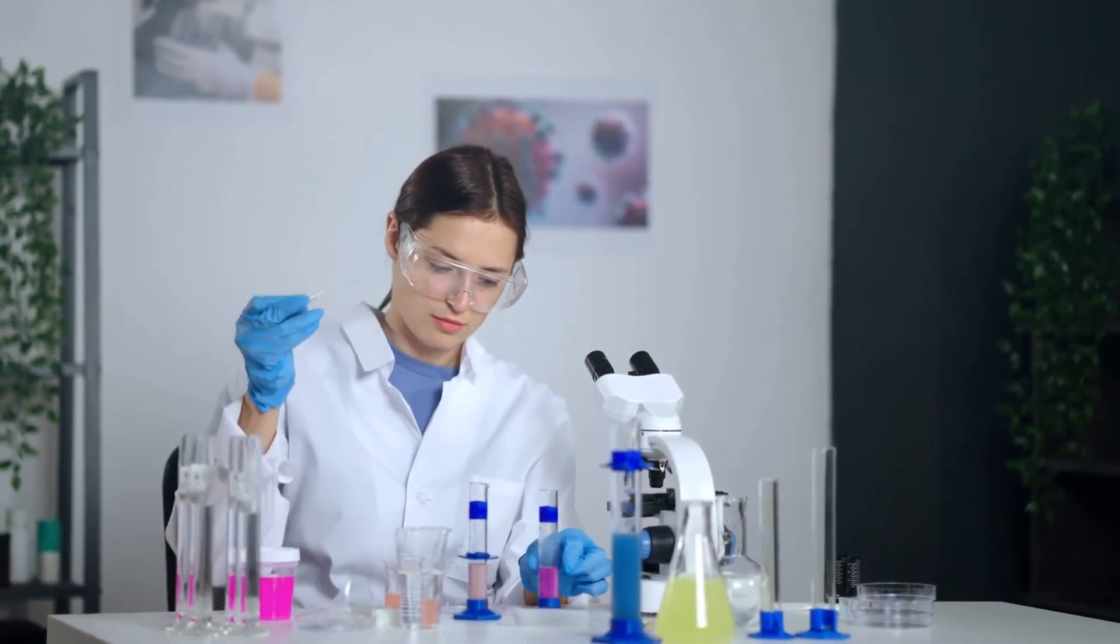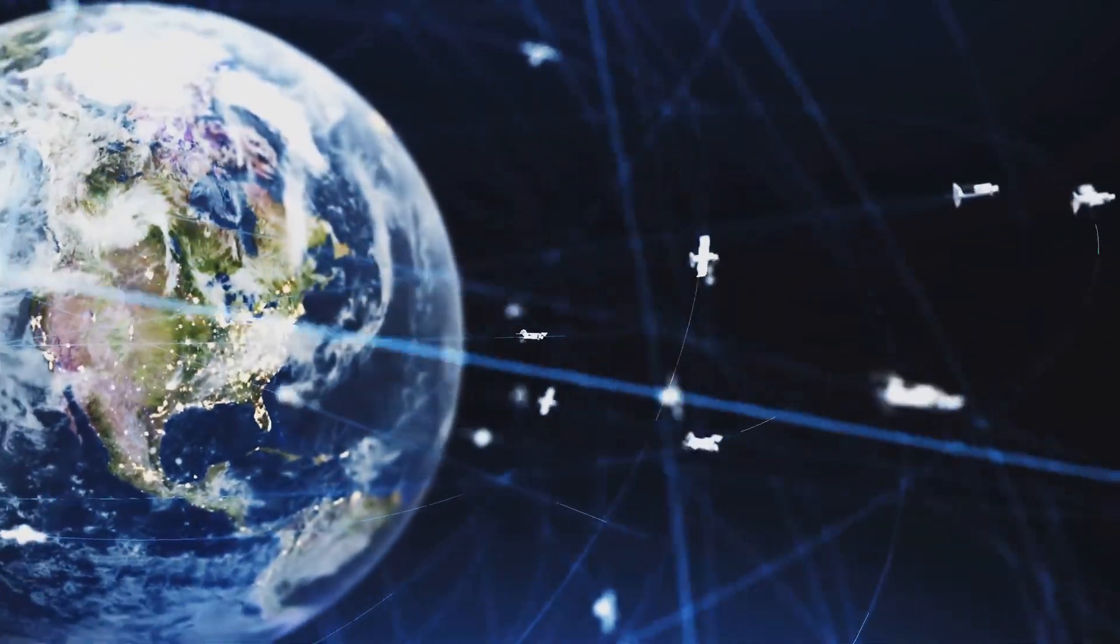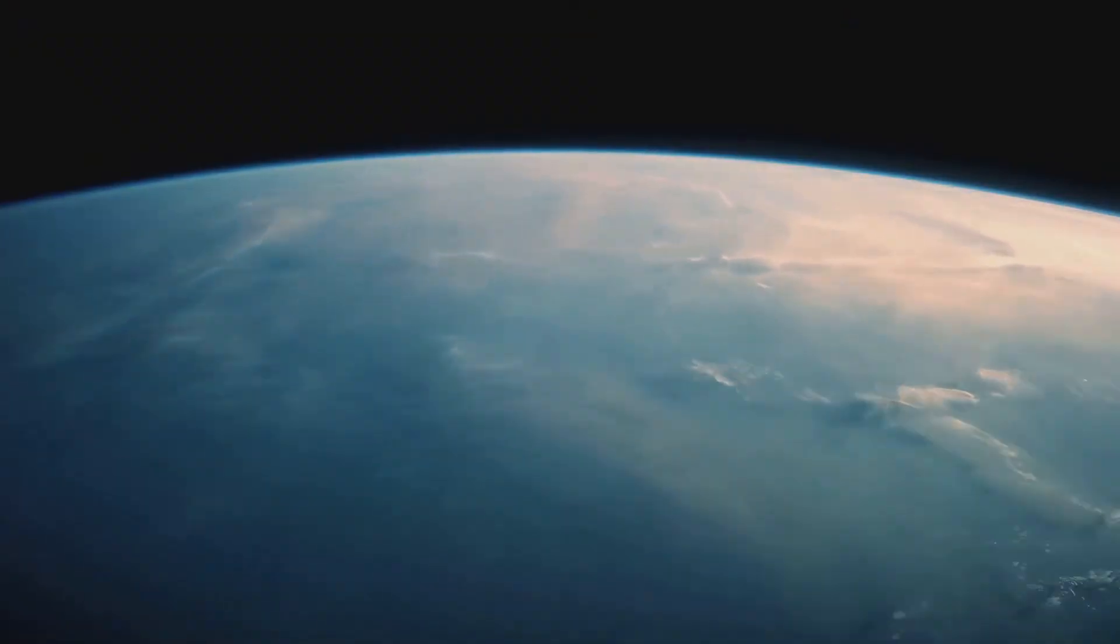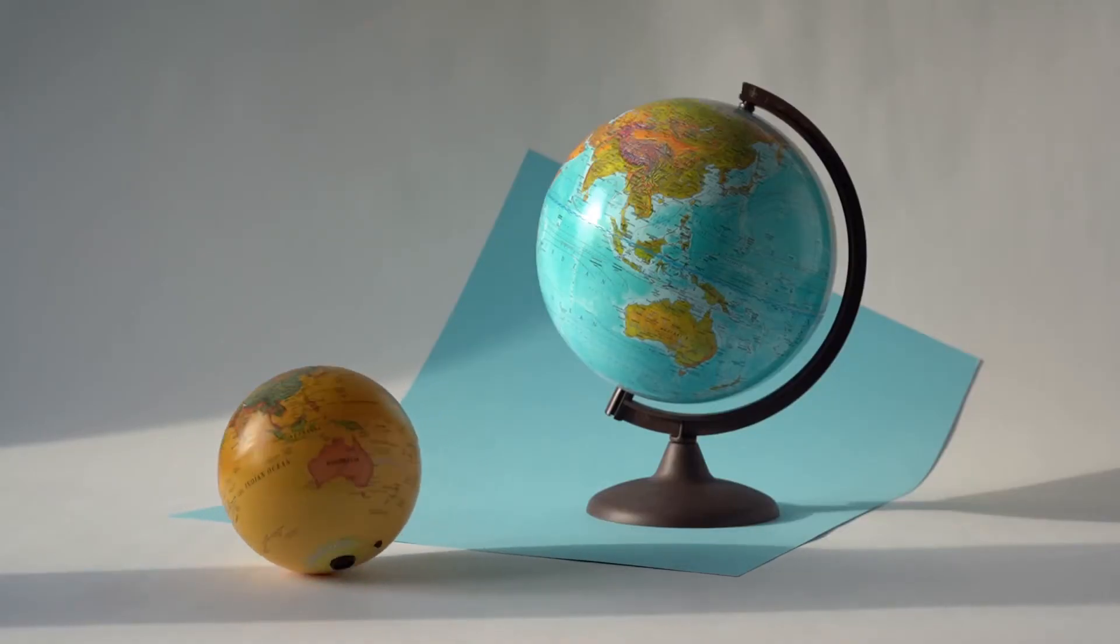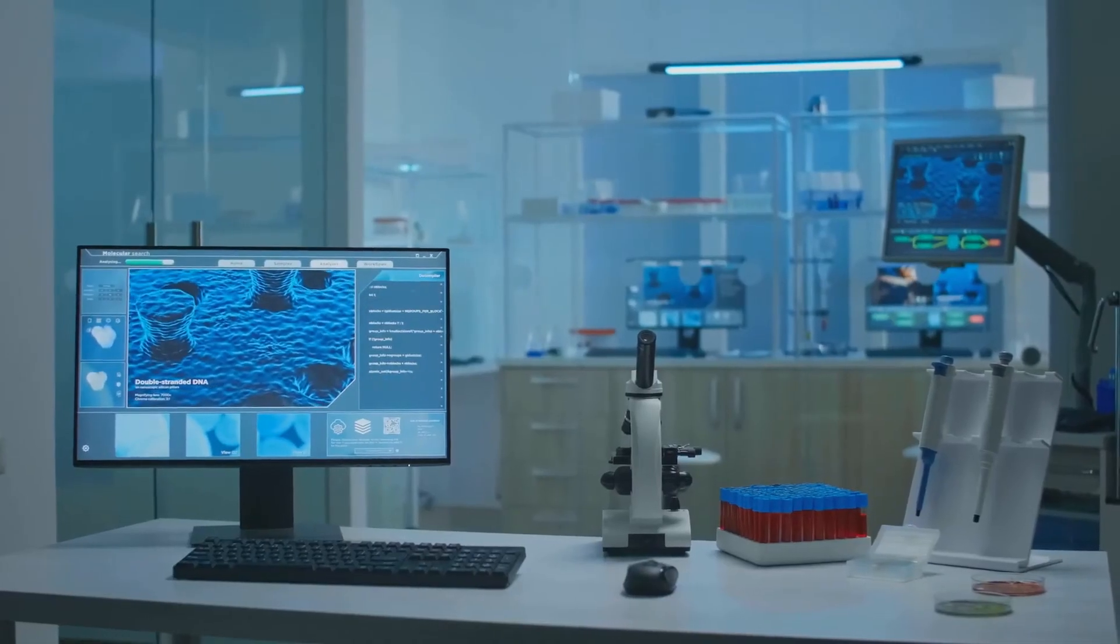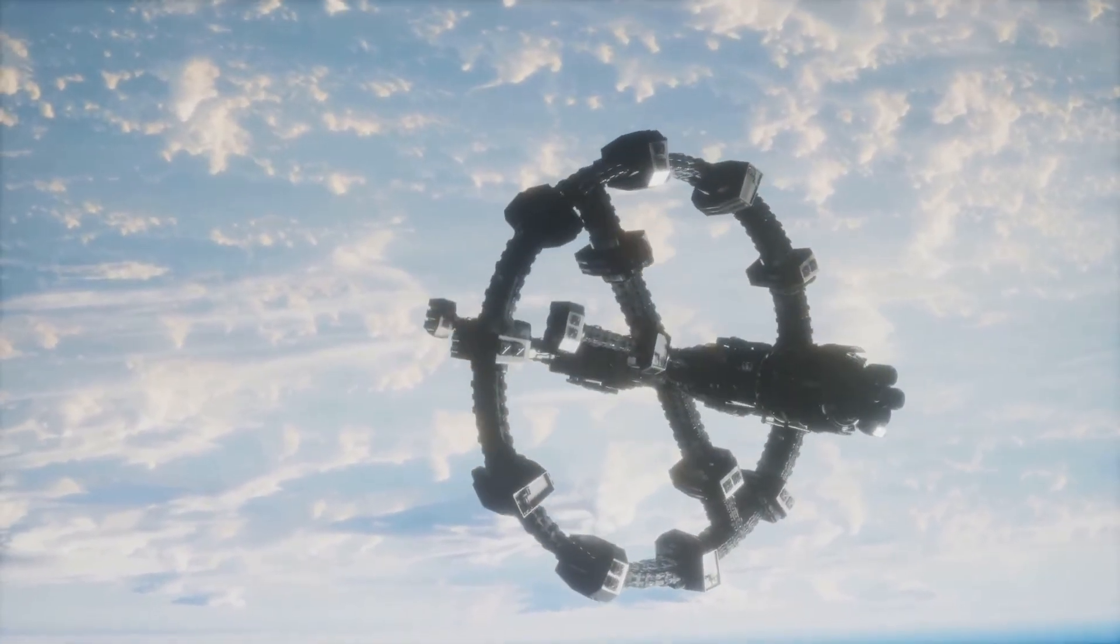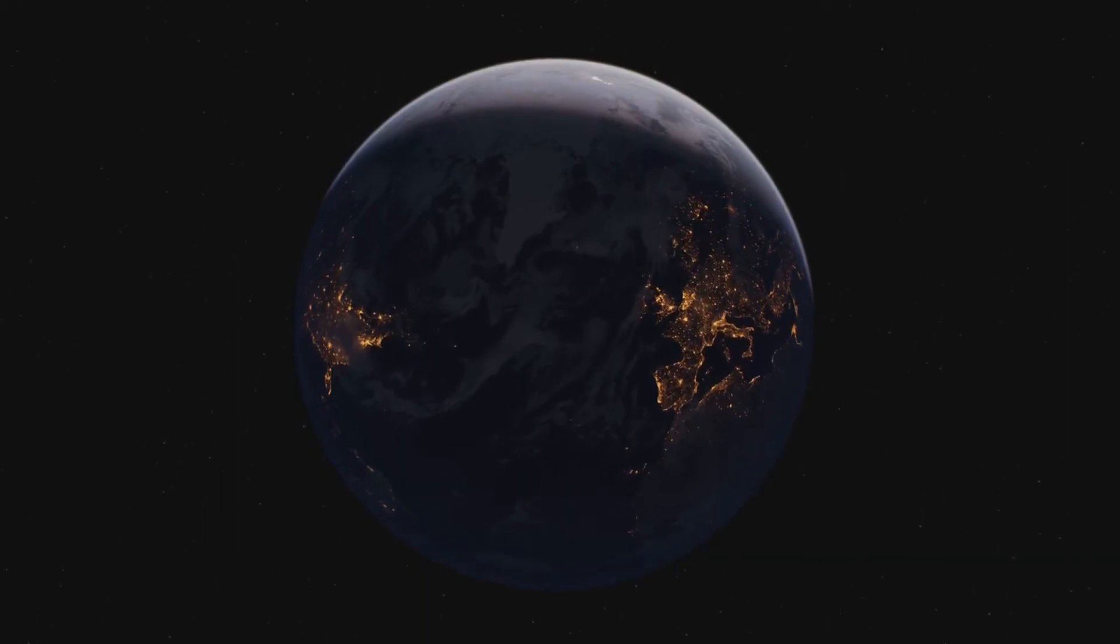Science isn't about belief, it's about measurement. From the equinox shadow to orbital mechanics to real-time satellite tracking, the evidence for a spherical Earth isn't just overwhelming, it's operational. Flat Earth isn't an equal model. It's an absence of one. It explains nothing, predicts nothing, and tests nothing. The Earth is round, not because it's popular, but because it works.